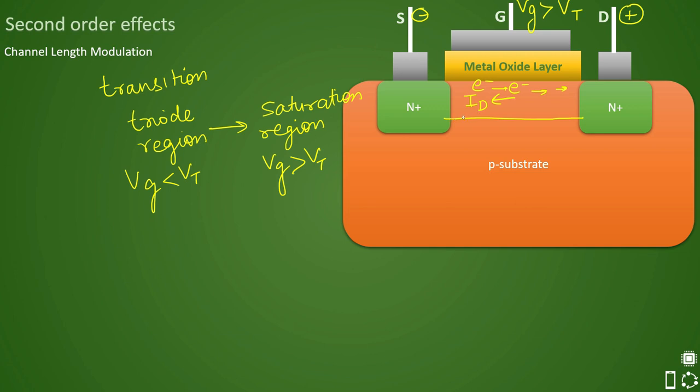Now because of high electric field your channel gets tapered and it will not be uniform, so it gets tapered towards the drain region and with this tapering happening the electric field becomes more intense and drain current further increases.